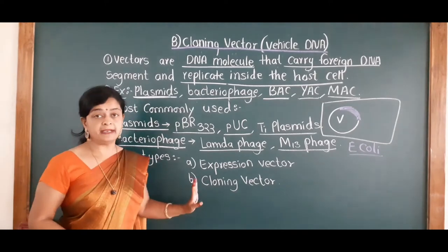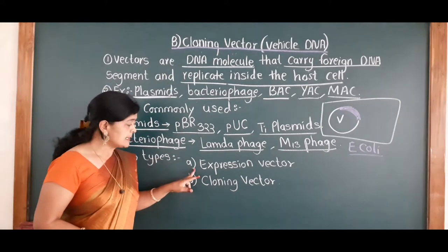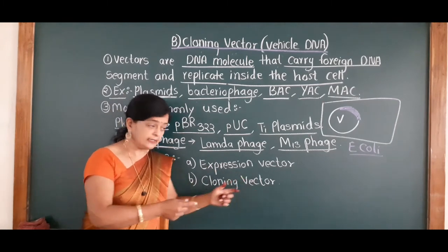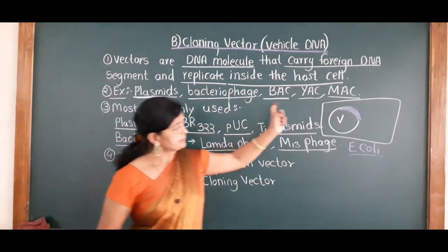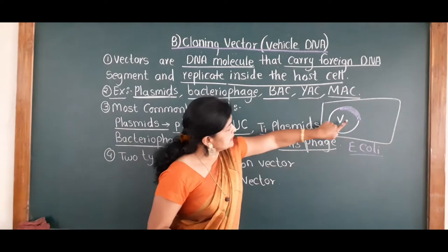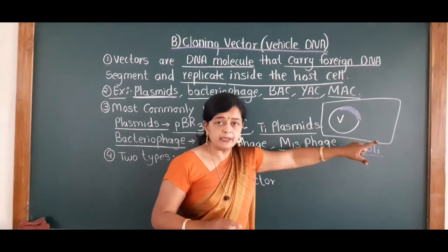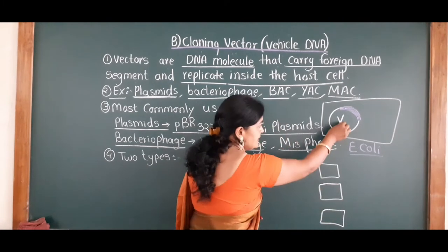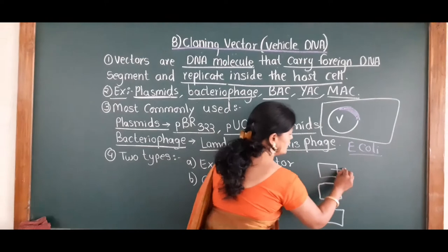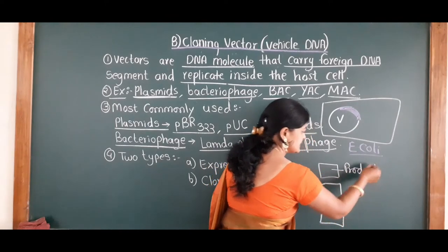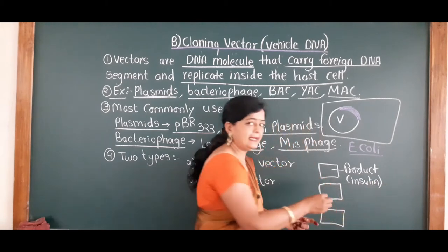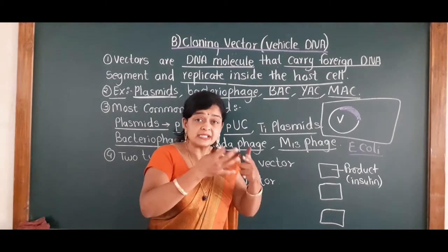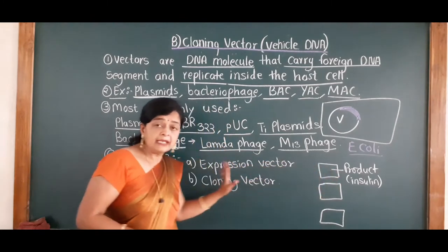Coming to the last point: there are two types of vectors. First type is called expression vector and another is called cloning vector. In expression vector, we perform rDNA technology. When we have 100 copies of bacteria, the vector is responsible for the production of a certain product — suppose it is producing insulin. So it is expressing, it is doing some work — producing insulin, antibodies, vaccine. That type of vector is called an expression vector.